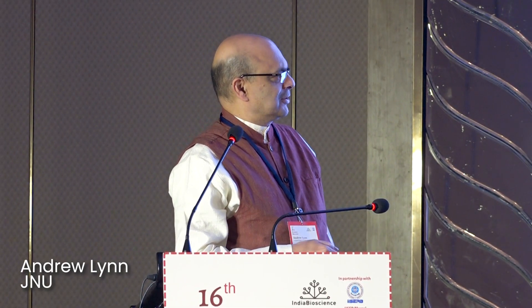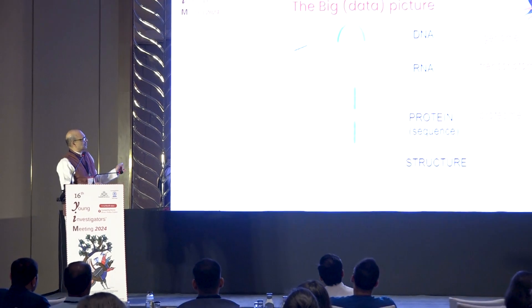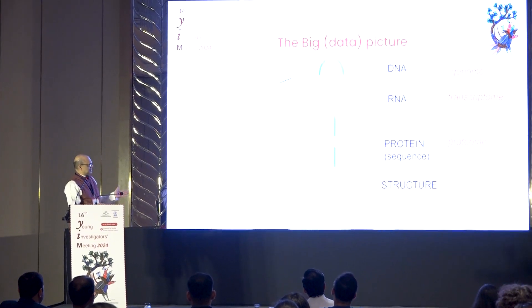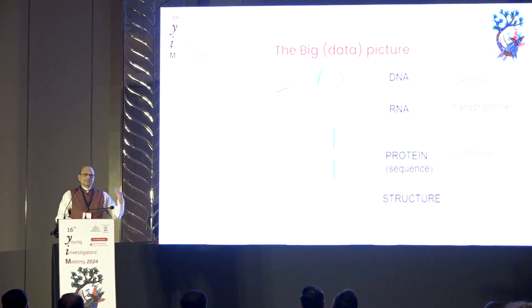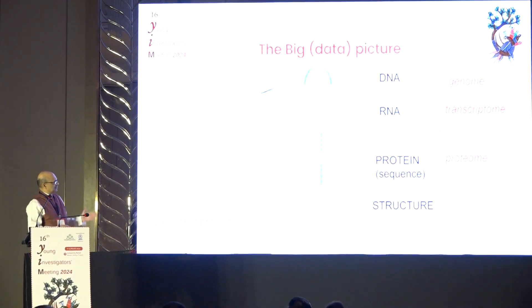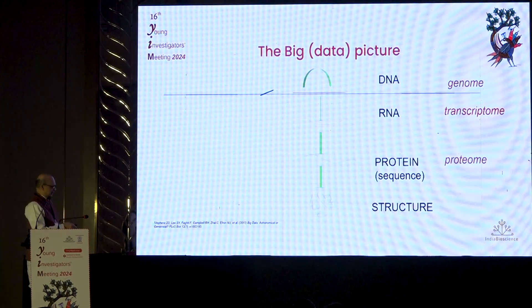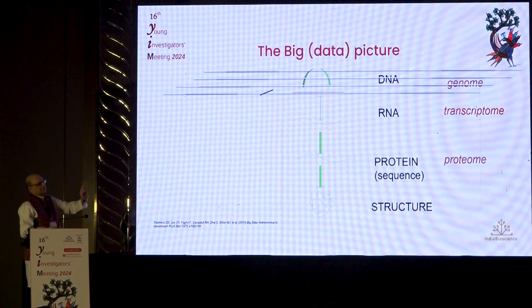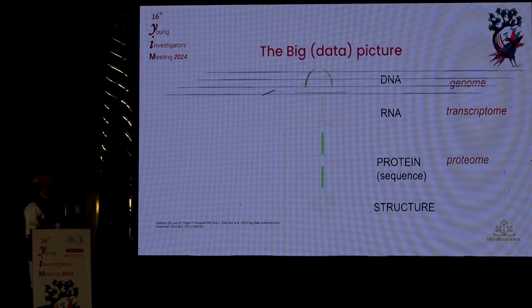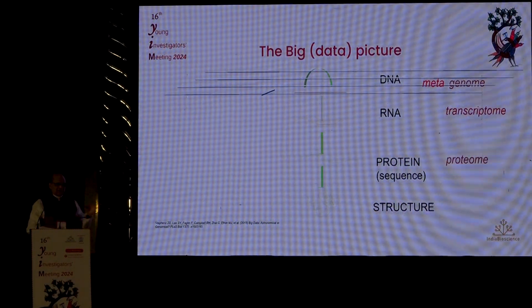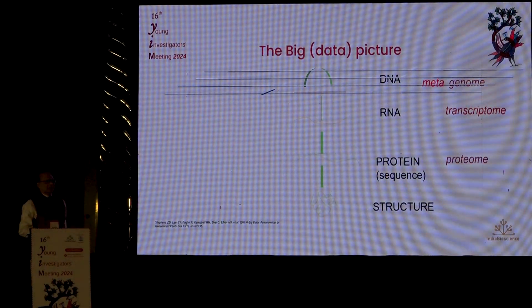I'm going to start with the standard stuff from the school textbooks because it's the molecular dogma. Basically, the data that we are getting in and use today covers genomics, transcriptomics, and proteomics. I separate the sequence and the structure because we deal with them differently — one with string algorithms and the other with coordinate geometry-based algorithms. When we take a number of these genomes together, it comes into the area of metagenomics. This is the state of what we are dealing with in data today.